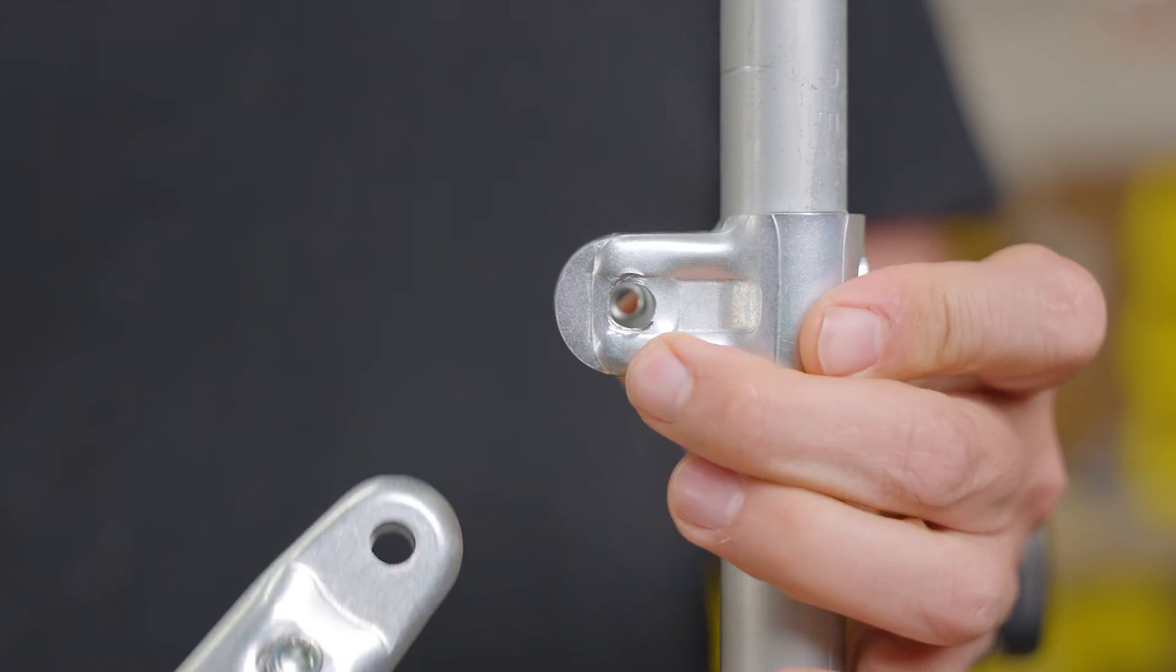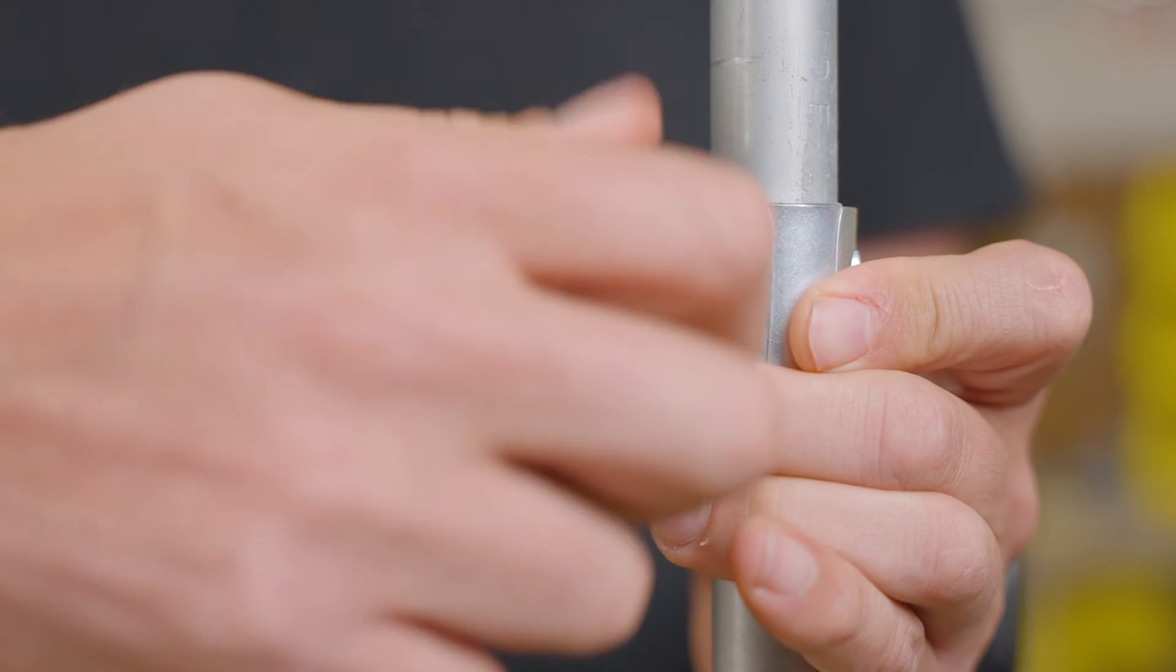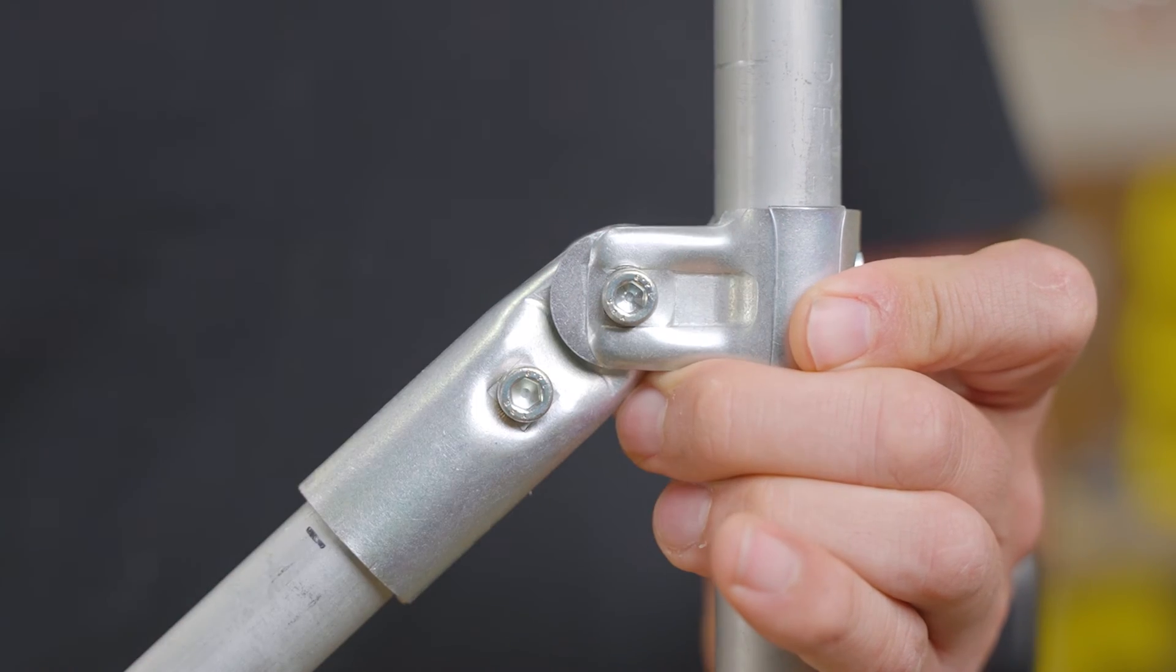The end clamp will go between the two pieces that make up the puzzle piece clamp. Align the holes in all four pieces and thread a bolt in the nut that you're holding on the other side.